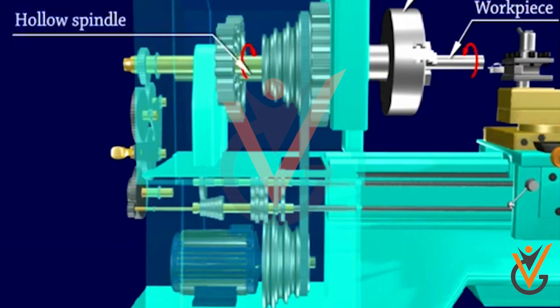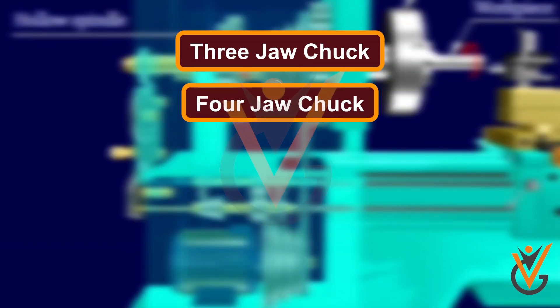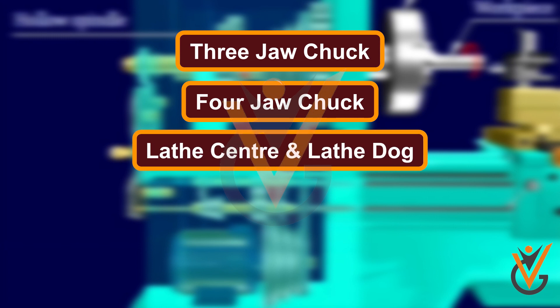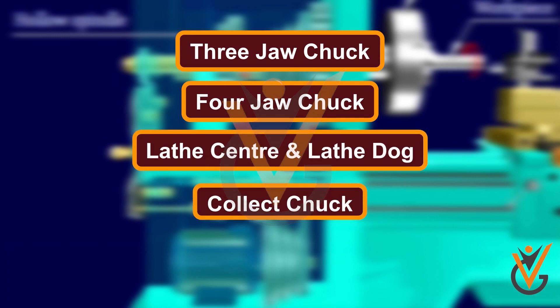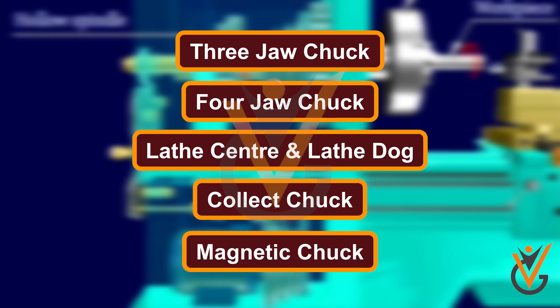Accessories mounted on the headstock spindle are: 3-jaw chuck, 4-jaw chuck, live center and lathe dog, collet chuck, and magnetic chuck.